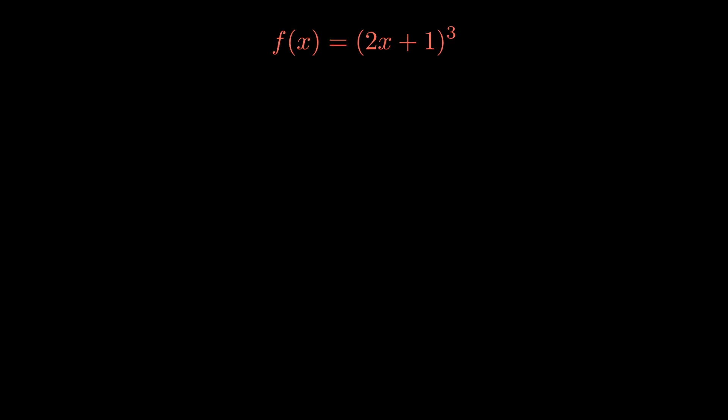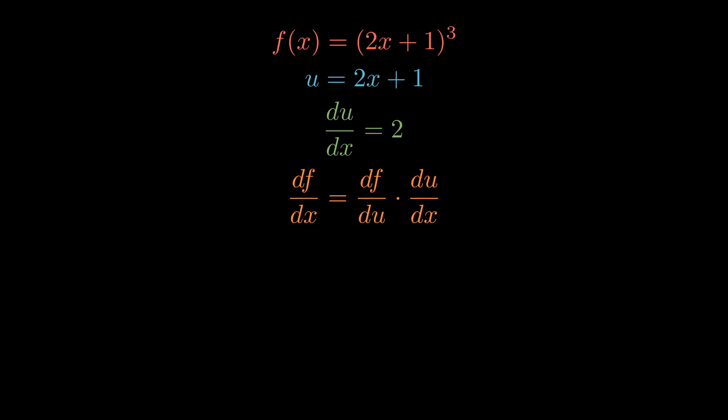Now let's look at an example. Let's differentiate (2x+1)³. The inner function is 2x+1 and the outer function is the cubic function. Let u equal 2x+1, so du/dx is simply 2. Since f equals u³, differentiating with respect to u gives 3u². Substituting back gives df/du equal to 3(2x+1)². Multiplying both expressions gives df/dx equal to 6(2x+1)².